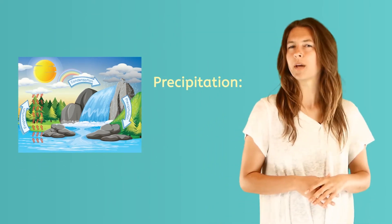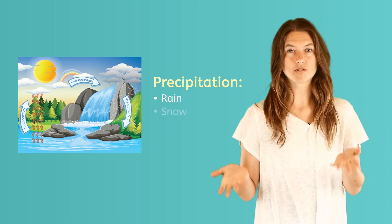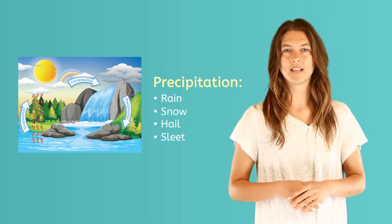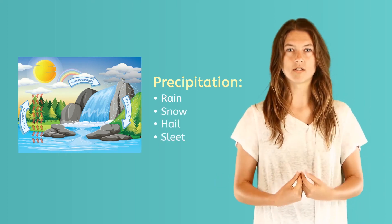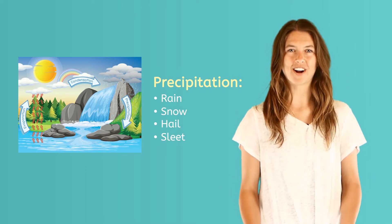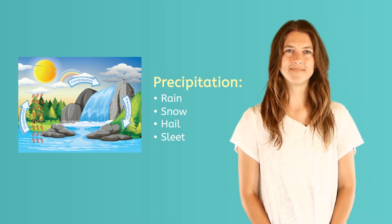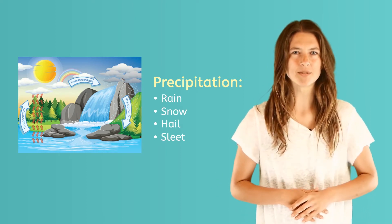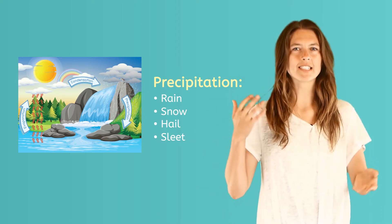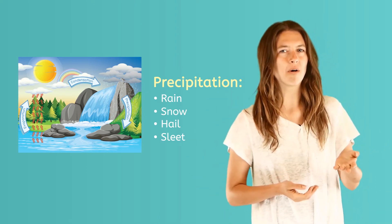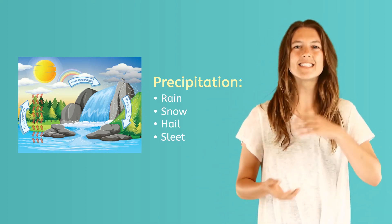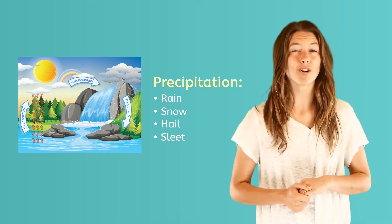Precipitation is a big word that really means rain, snow, hail, or sleet. It's the liquid and water particles that fall from the clouds onto the ground. But why does precipitation sometimes come down as rain, other times as snow, or hail, or sleet? Let's look at this process more closely.